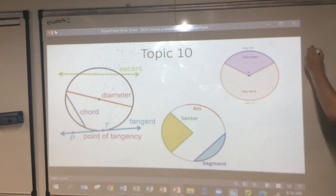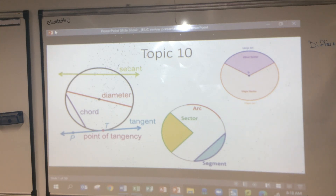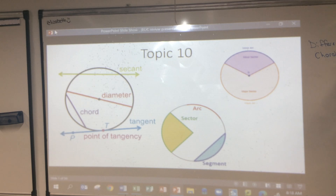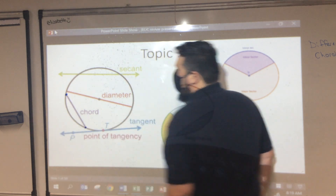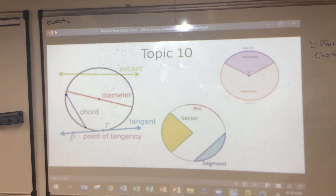The difference between a chord and a secant line is that the chord has defining end points — it starts and ends on the circumference. The secant line continues forever. Let's make that look a little nicer: the secant line continues forever, but notice that both only touch the circle twice.